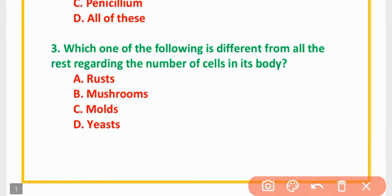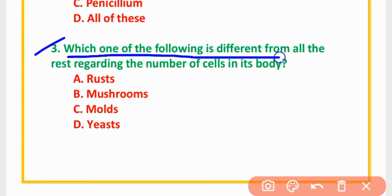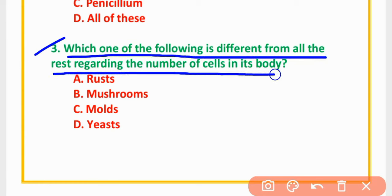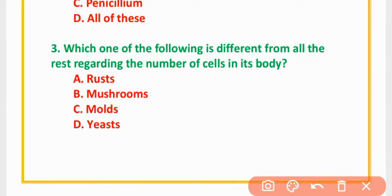MCQ Number 3: Which of the following is different from all others regarding the number of cells in its body? Options: Rust, Mushroom, Molds, or Yeasts. The correct option is option D: Yeasts.